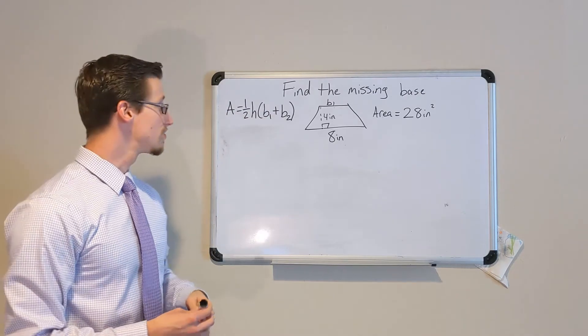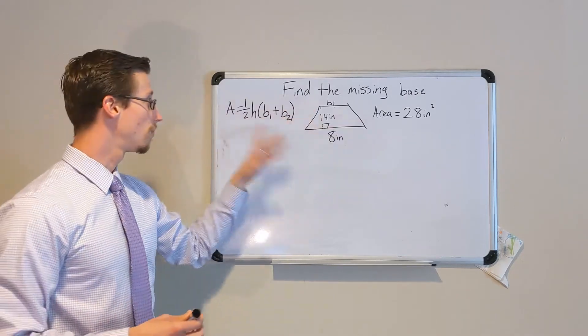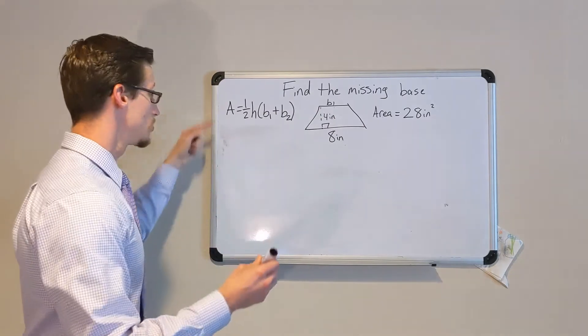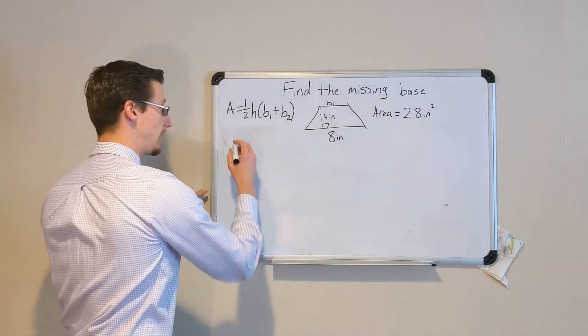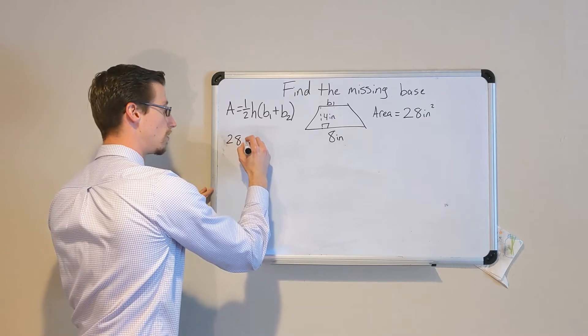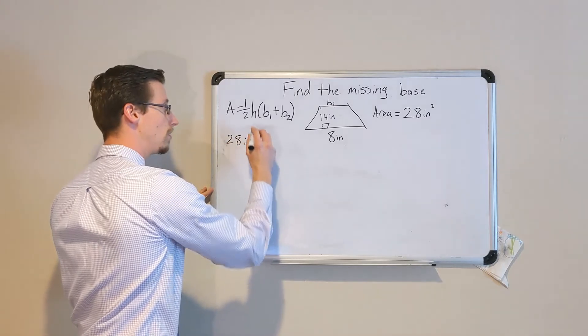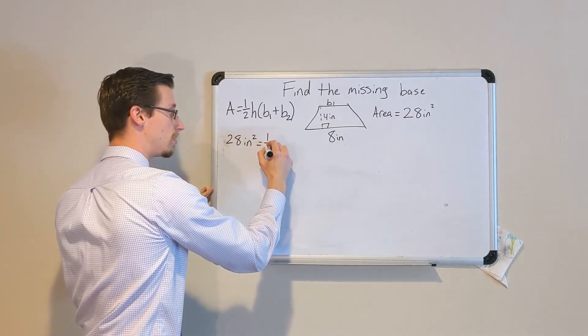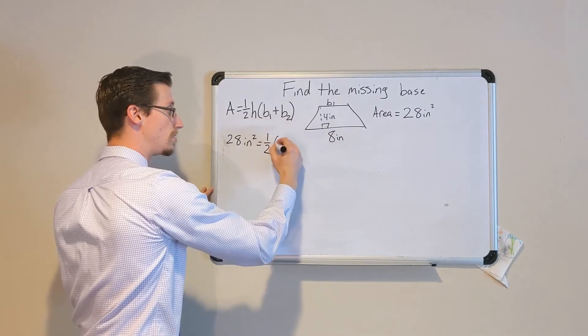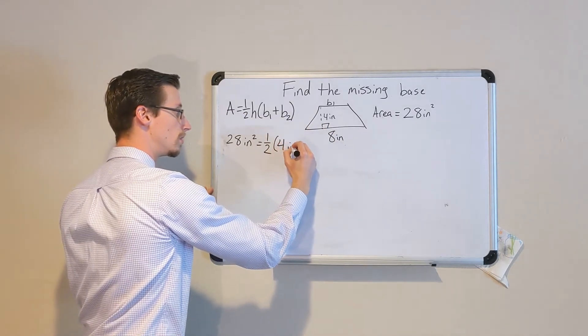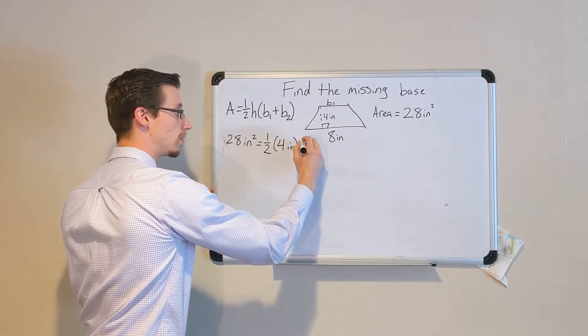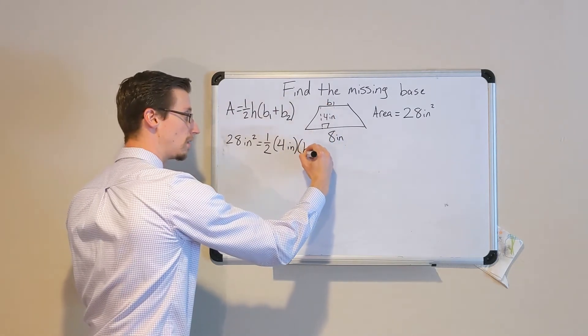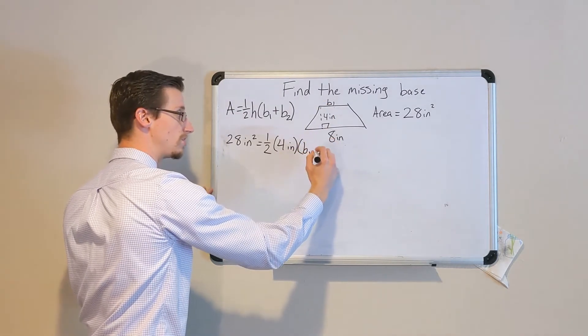What we need to do next is fill in the values from the problem into the formula. So we know the area is 28 inches squared equals one half. The height is four inches. We don't know base 1 yet, but we do know that base 2 is 8 inches.